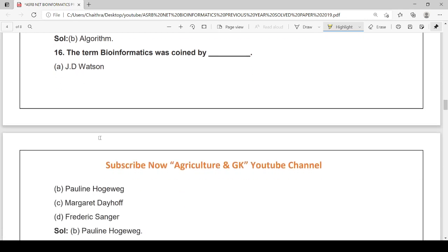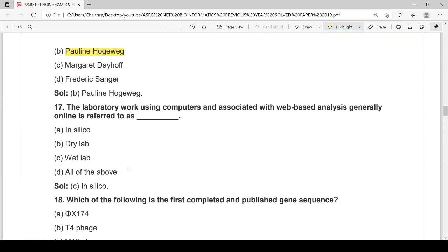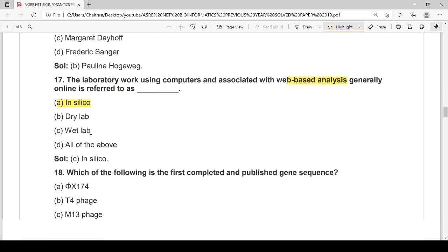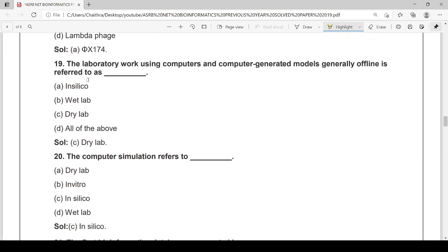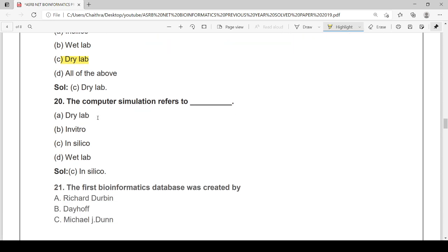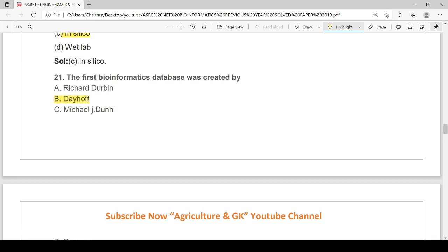The term bioinformatics was coined by Pauline Hogeweg. The laboratory work using computers and associated with web-based analysis generally online is referred to as in silico, option A. Which of the following is the first completed and published gene sequence? It is phi-174. The laboratory work using computers and computer-generated models generally offline is referred to as dry lab. The first bioinformatics database was created by Dayhoff.